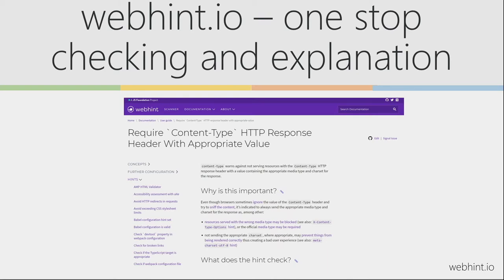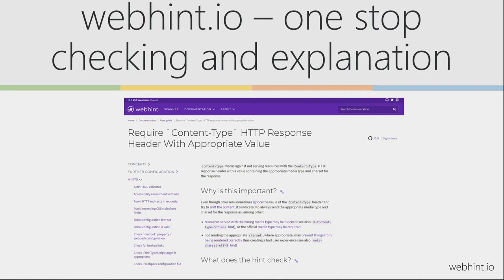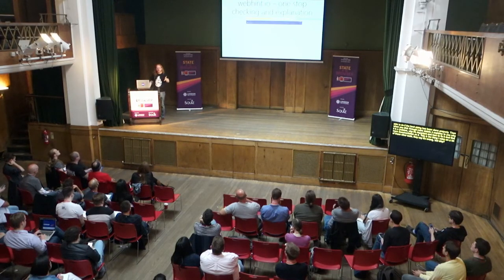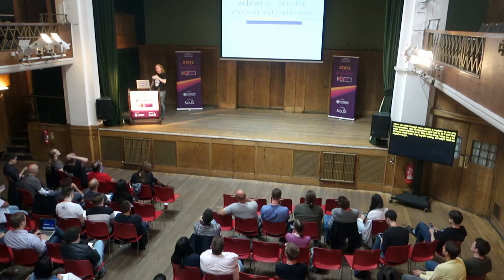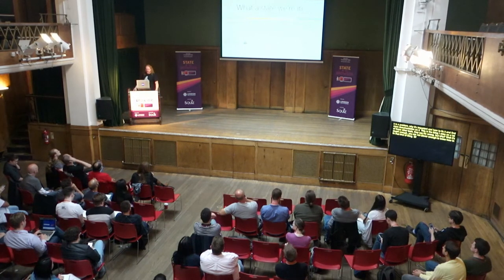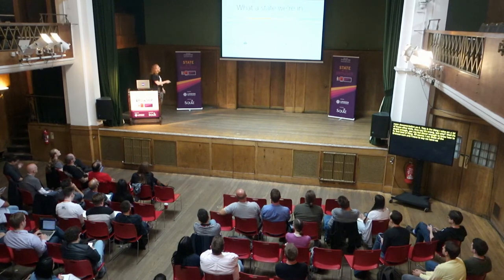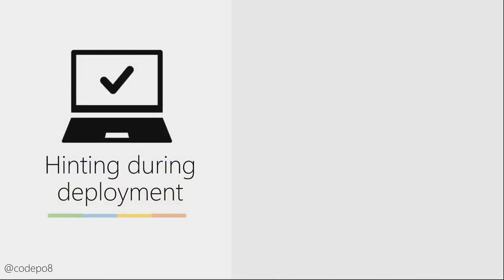This is what I miss in a lot of other tools — they say it's wrong, but why? They don't tell you how to fix it. I ran stateofthebrowser.com through it and we have no accessibility errors — that's pretty cool. We got a few interoperability, PWA, performance, and security issues. But here's the interesting thing: what if I don't care about PWA? I still have a terrible report I can't show to my boss because there are two errors in there. So you can actually configure all of that.